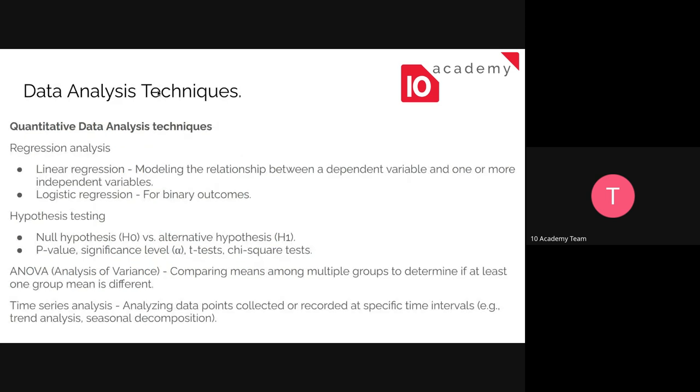So we can classify our data analysis techniques into two: quantitative and qualitative. Let's start with the quantitative. So when we talk about quantitative, we have the regression analysis, which is linear or logistic regressions, like the binary outcomes, zero and ones, and the regressions by modeling the relationship between the independent and the dependent variables. So we've got a lot of graphs and do analysis there. Hypothesis testing, like null hypothesis testing, AB testing, and so on, chi-square test, and so on.